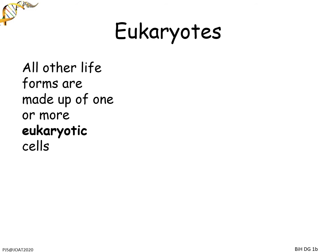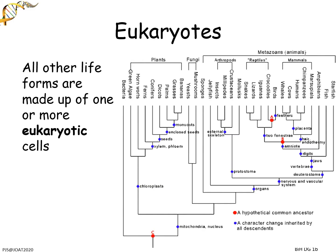Eukaryotes are something a bit different. Apart from your bacteria and your Archaea, everything else is made up of eukaryotic cells - we are made up of these. This tree shows where we think things have started. At the bottom we have our hypothetical common ancestor - the first cell that existed on the planet. One of these ancestral cells gained a mitochondria and a nucleus, and this was the big split - once you have a nucleus, you're eukaryotic.